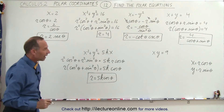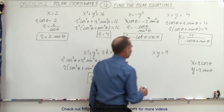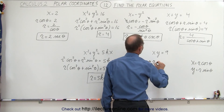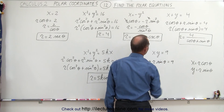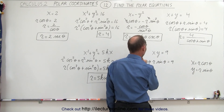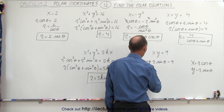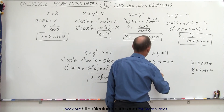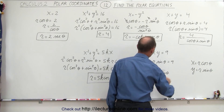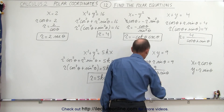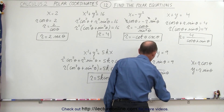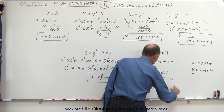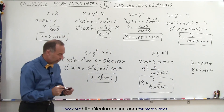Finally, for x times y equals 9, we write r times cosine of theta times r times sine of theta equals 9. That gives r squared equals 9 divided by cosine of theta times sine of theta. Taking the square root, r equals 3 divided by the square root of cosine of theta times sine of theta. We could manipulate the denominator further, but we can leave it like that — it's good enough.